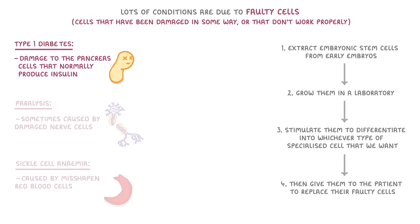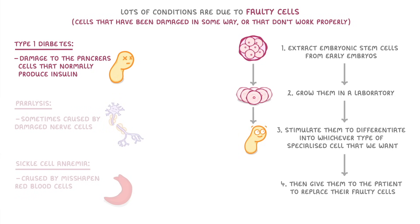For example, in the case of a diabetic patient where some of their pancreas cells have been damaged and don't produce insulin anymore, scientists would take some embryonic stem cells and grow them in a laboratory, then stimulate them to differentiate into pancreas cells so that they can produce insulin, and then inject those cells into the patient's pancreas where they could continue to divide and produce the insulin that the patient needs.